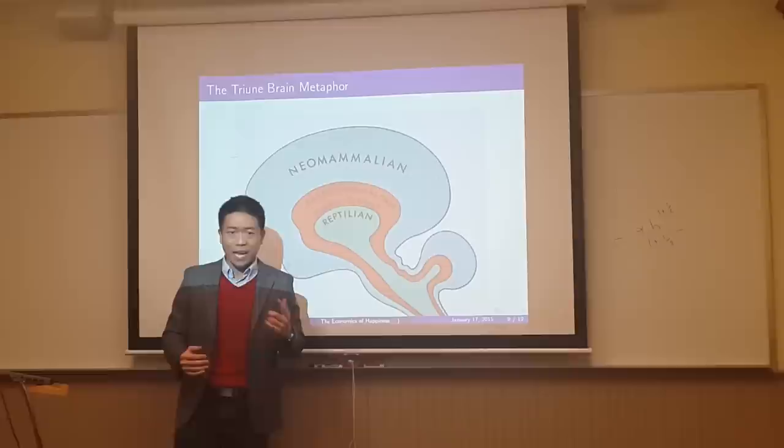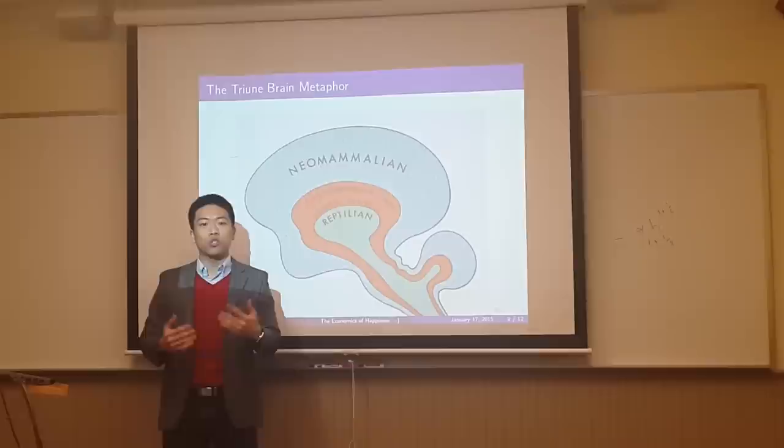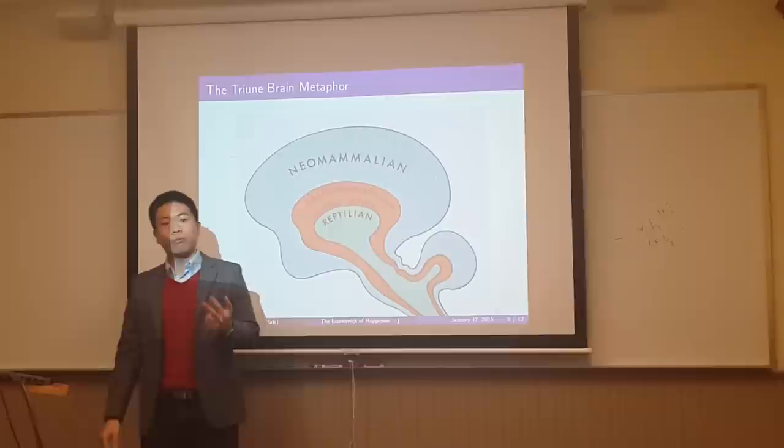Secondly, we developed our mammalian brains. And this is responsible for our emotions, feeling joy or pain and sorrow. And third, and most recently, we developed our prefrontal cortex, which is responsible for higher cognitive thought processes and abstract thinking.